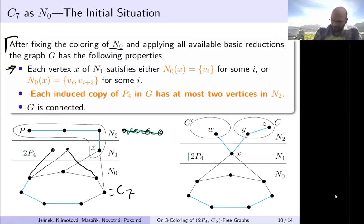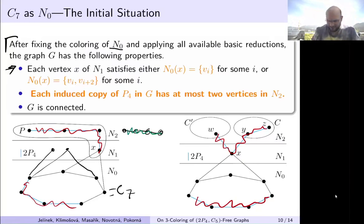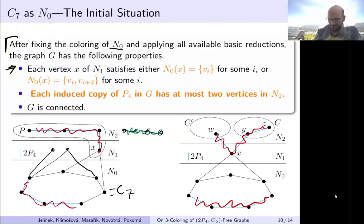The second property uses the first: each induced copy of P4 in G has at most two vertices in N2. If there were an induced P4 entirely in N2, combined with a P4 through N1 and N0 we'd get 2P4 — not allowed. The third property is that G is connected; otherwise other components are easy and we solve them in polynomial time. This is a very strict structure, but it still takes quite a lot of branching and reductions to get to the final result.